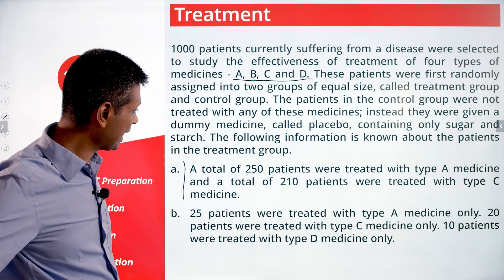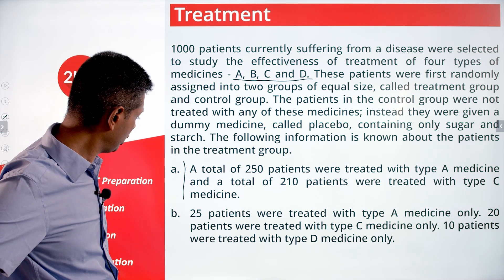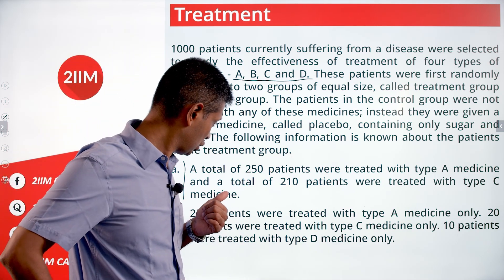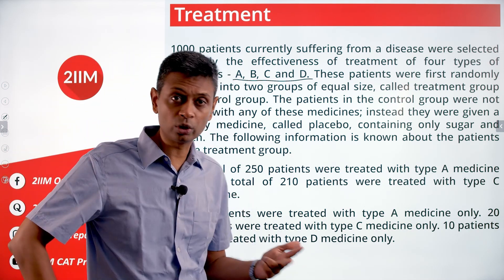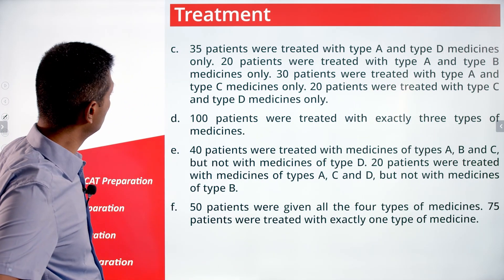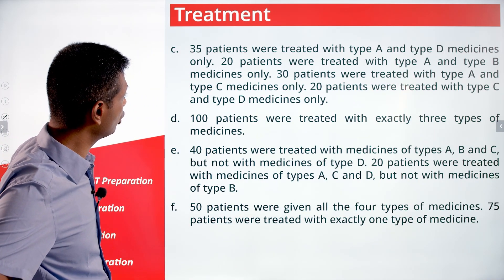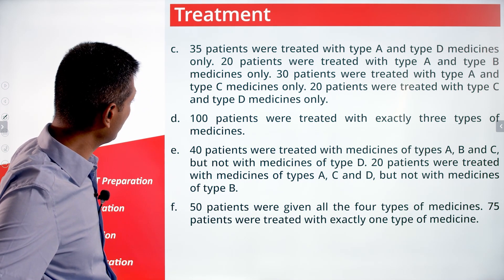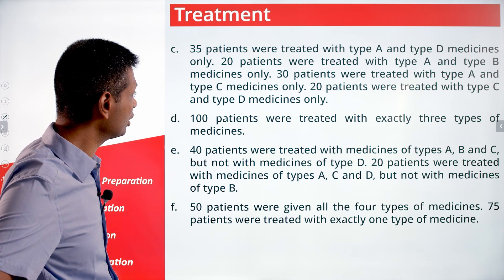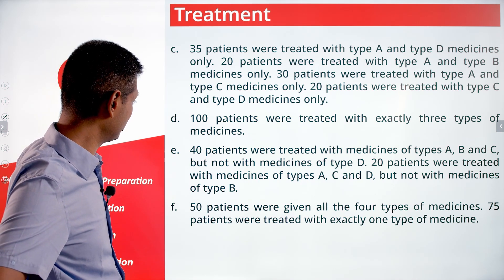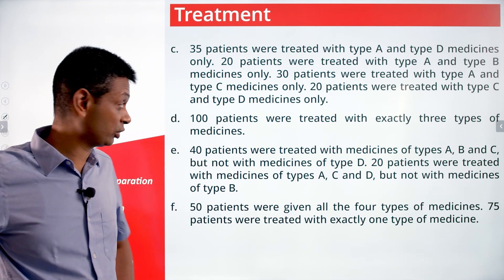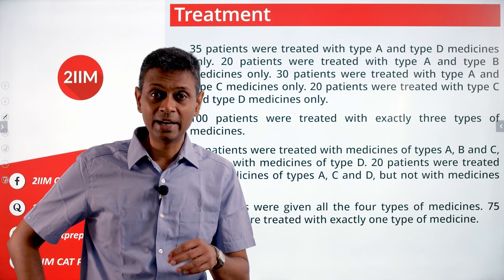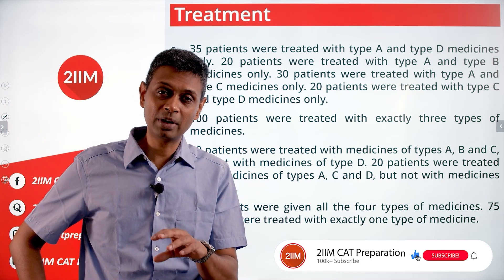25 patients were treated with type A medicine only, 20 with type C only, and 10 with type D only. 35 were given A and D only, 20 were given A and B only, 30 were given A and C only, 20 were given C and D only, and 100 were treated with exactly three types of medicines. There are many data points — too many to retain intuitively.